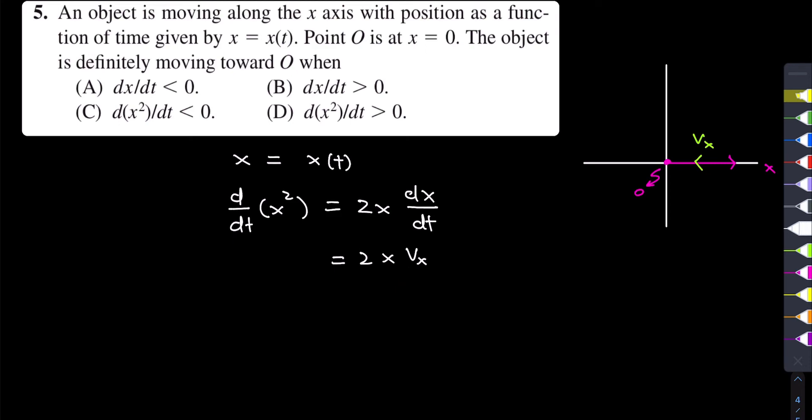If this product is negative, then it is less than zero. And since this product equals d/dt of x squared, this means that d/dt of x squared is less than zero, and then the particle will definitely move toward the origin.